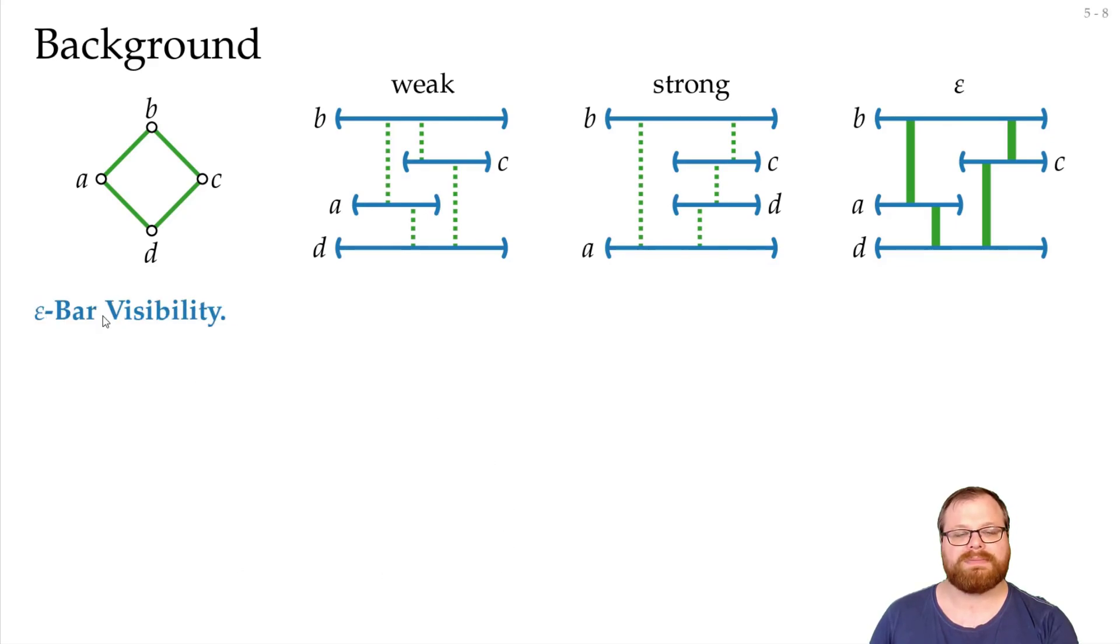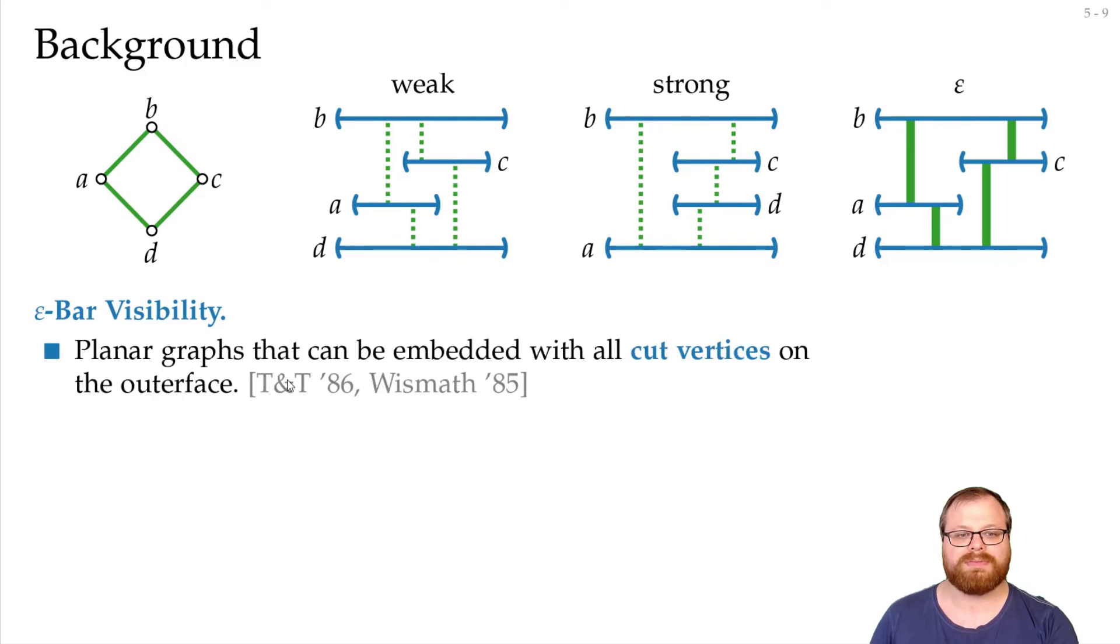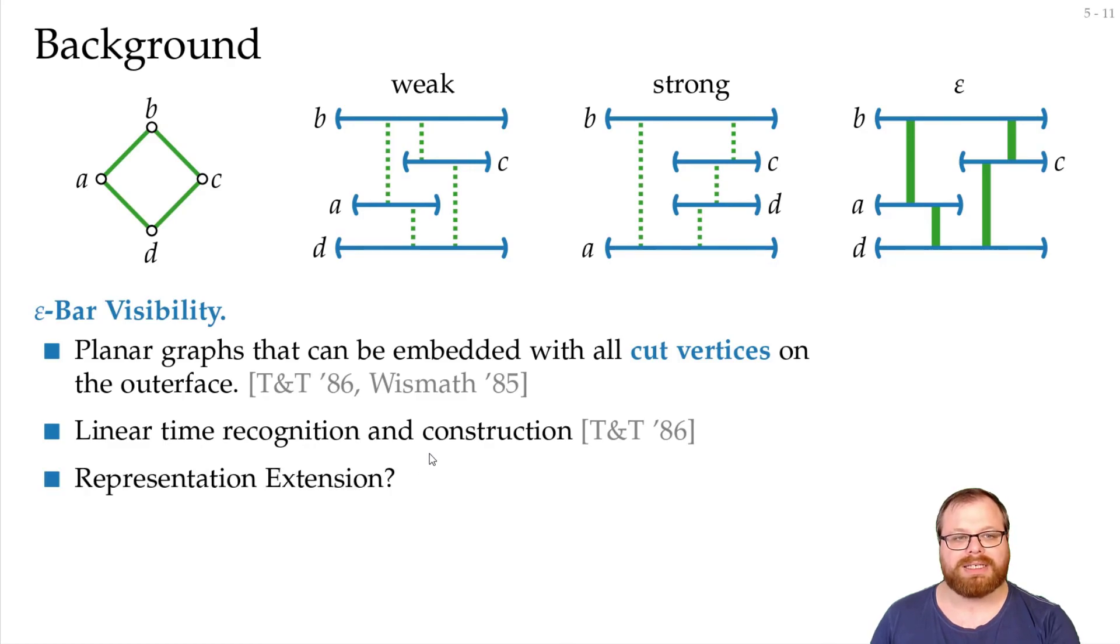Today we want to focus on epsilon bar visibility. Here it has also been shown by Tamasier and Tolis and by Wismath that all planar graphs that can be embedded with all cut vertices on the outer face have such an embedding. There again is a linear time recognition and construction algorithm. But it has been unknown until a few years ago what the complexity of the representation extension problem is. And that we want to do in this lecture.